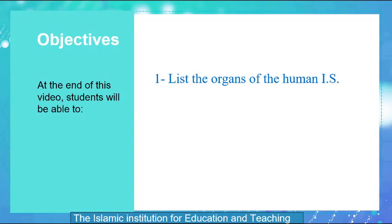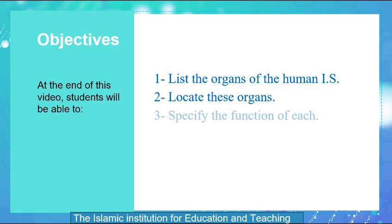The objectives we're going to explain are: list the organs of the human immune system, locate these organs, and specify the function of each.